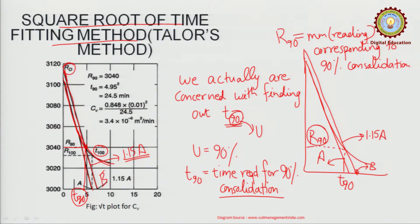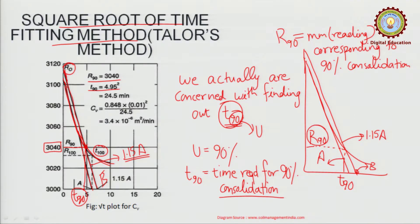In an example, t90 comes to be around 4.95 on the √t plot, so t = 4.95 squared. The example shows that on the under-root t plot, the value less than 5 is taken as 4.95, and squaring it gives the actual t90 in minutes.